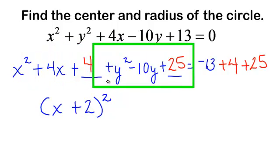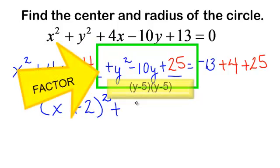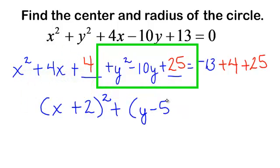Now let's group these next three terms, y squared minus 10y plus 25. Let's factor that, and that will be y minus 5 times y minus 5. It's minus because I want to get a negative 10. So that will be y minus 5 in parentheses squared.